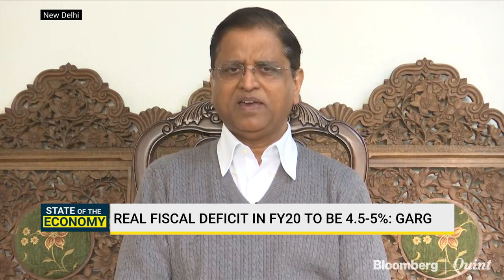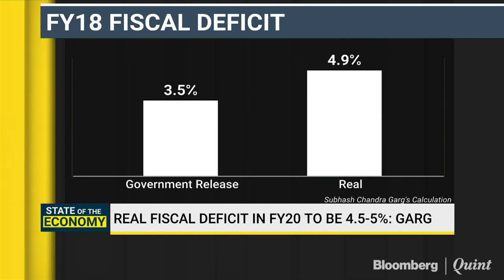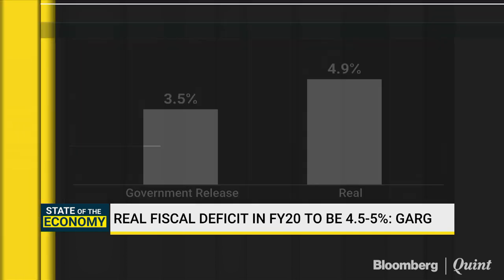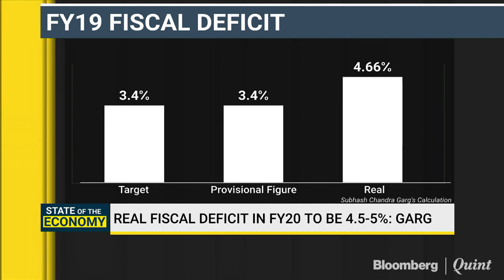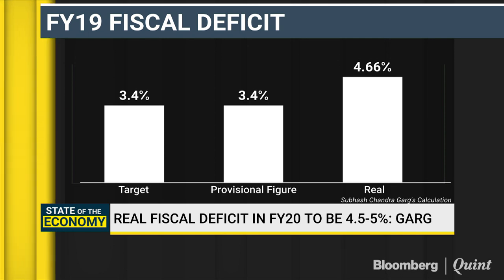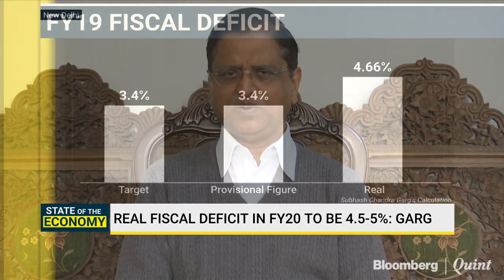For 2018-19 it turns out to be about 4.66 percent. For this year, the recapitalization amounts, the food subsidy adjustments, and the fully serviced bonds are not yet fully available, but from whatever information is available in the public domain, it is quite likely that if the headline fiscal deficit is anywhere close to 3.7 to 4 percent, the real fiscal deficit would be very close to five percent — anywhere between 4.5 to 5, but closer to five in my judgment.